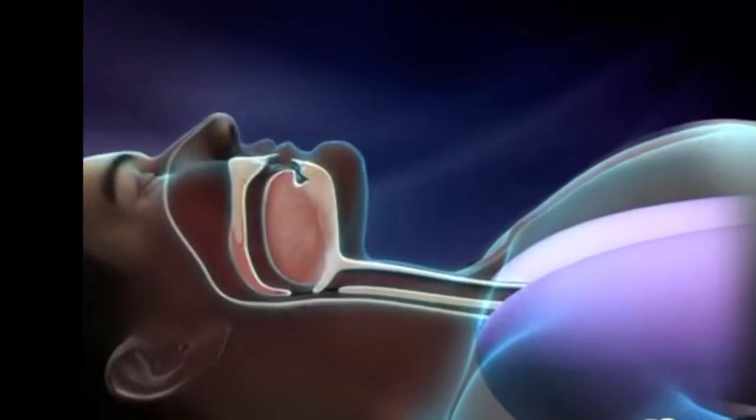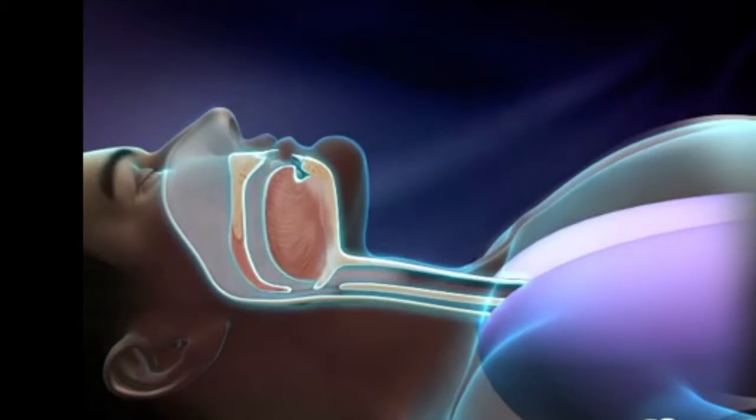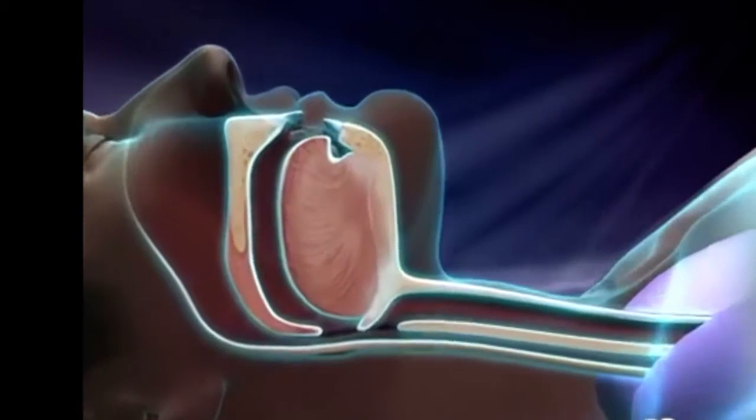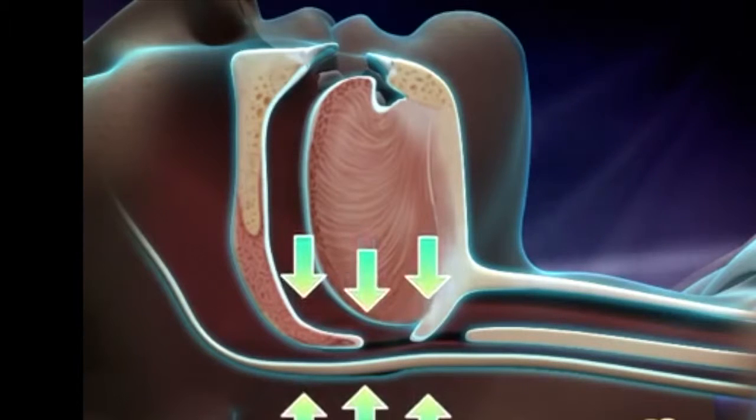When you breathe, air travels through your nose, down the throat, through the windpipe, and into your lungs. The narrowest part of that pathway is in the back of your throat. When you're awake, muscles keep that pathway relatively wide open.